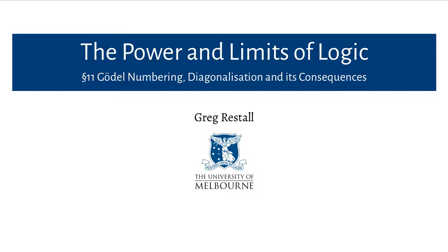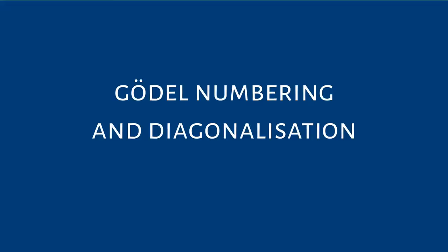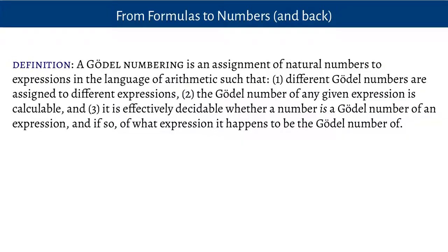In this lesson, we're going to put the pieces together of everything that we've done so far to show that logic and theories of arithmetic are undecidable. One step that we need to take to do this is to show how we can convert facts about numbers to facts about formulas. And to do this, we'll use the idea of a Gödel numbering.